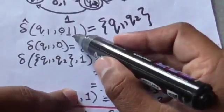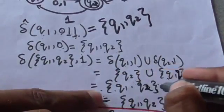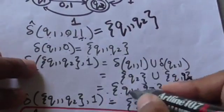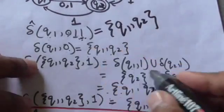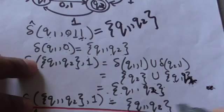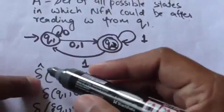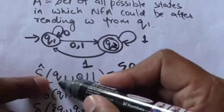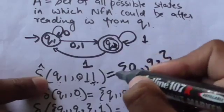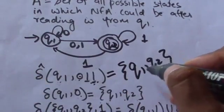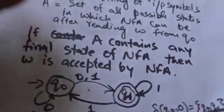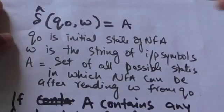Now apply the third input symbol of the string, that is 1, to this set of states {q1, q2}. When we apply 1 to the set {q1, q2}, we again get a set of states {q1, q2}. So the output of the extended transition function for present state q1 and string of input symbols 0 1 1 is the set {q1, q2}.